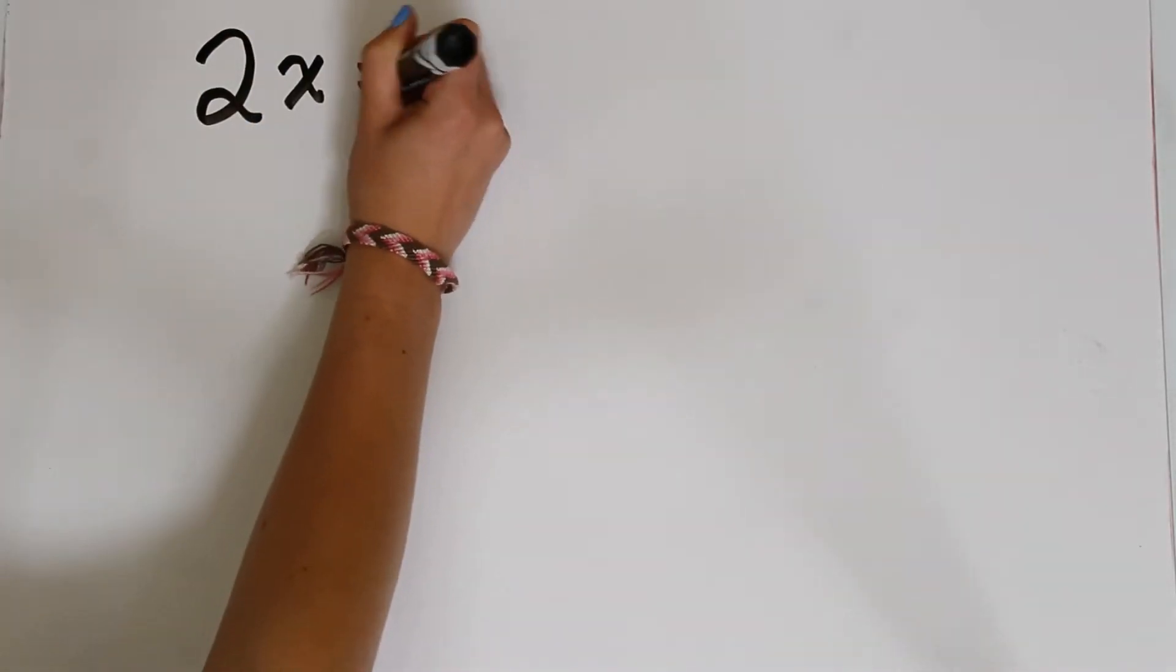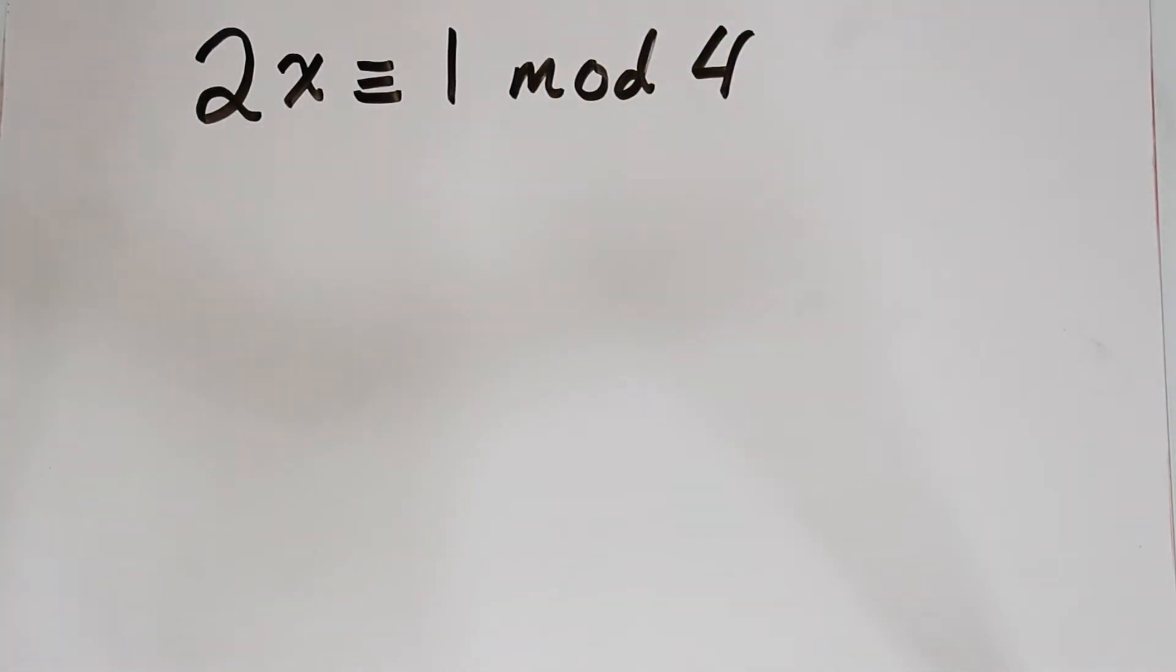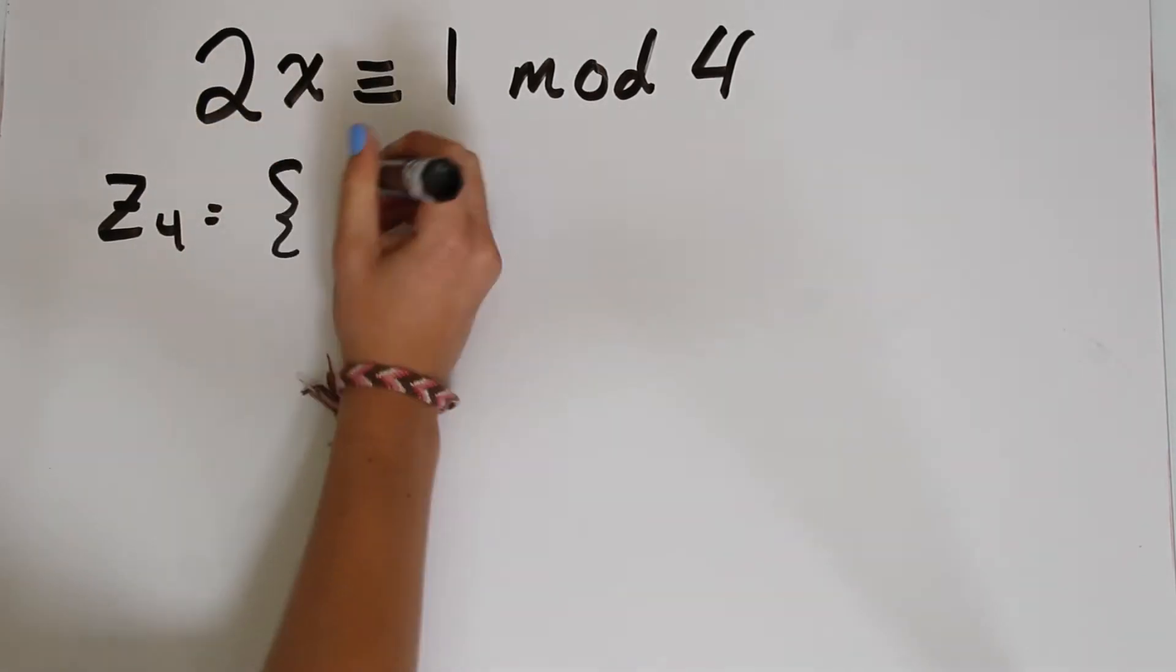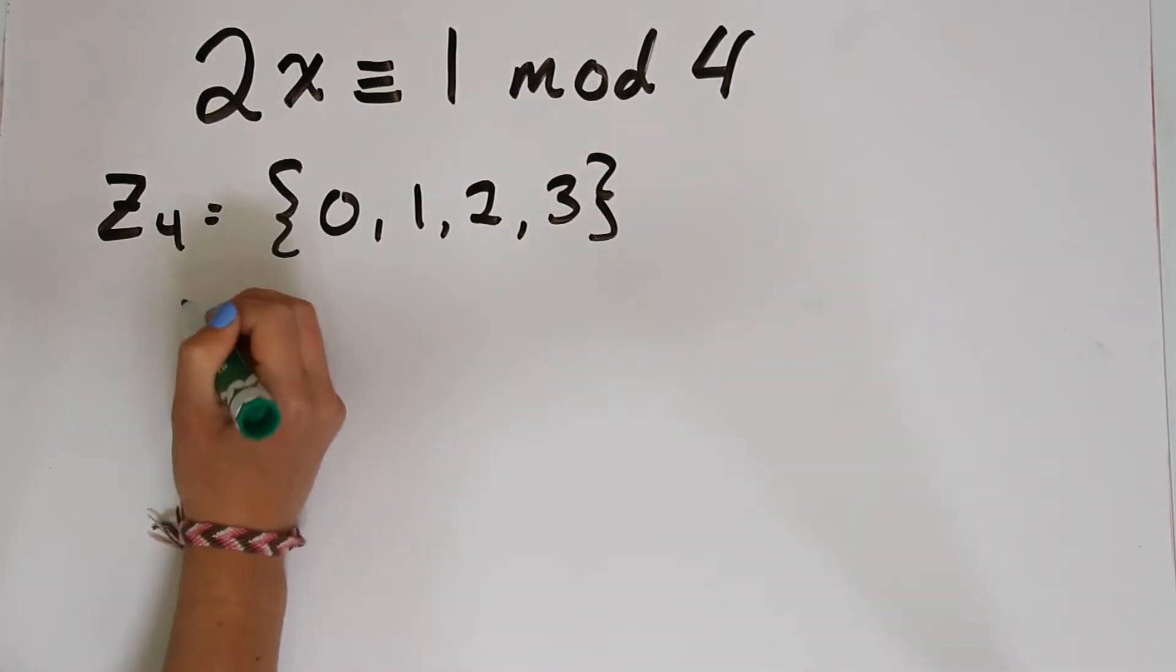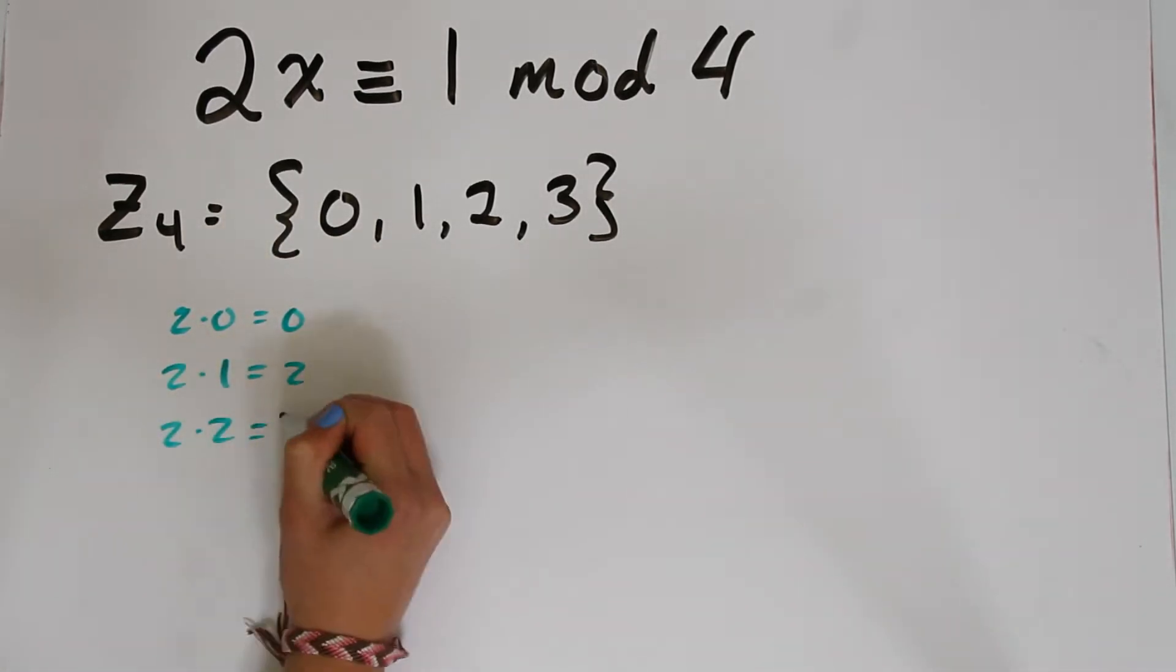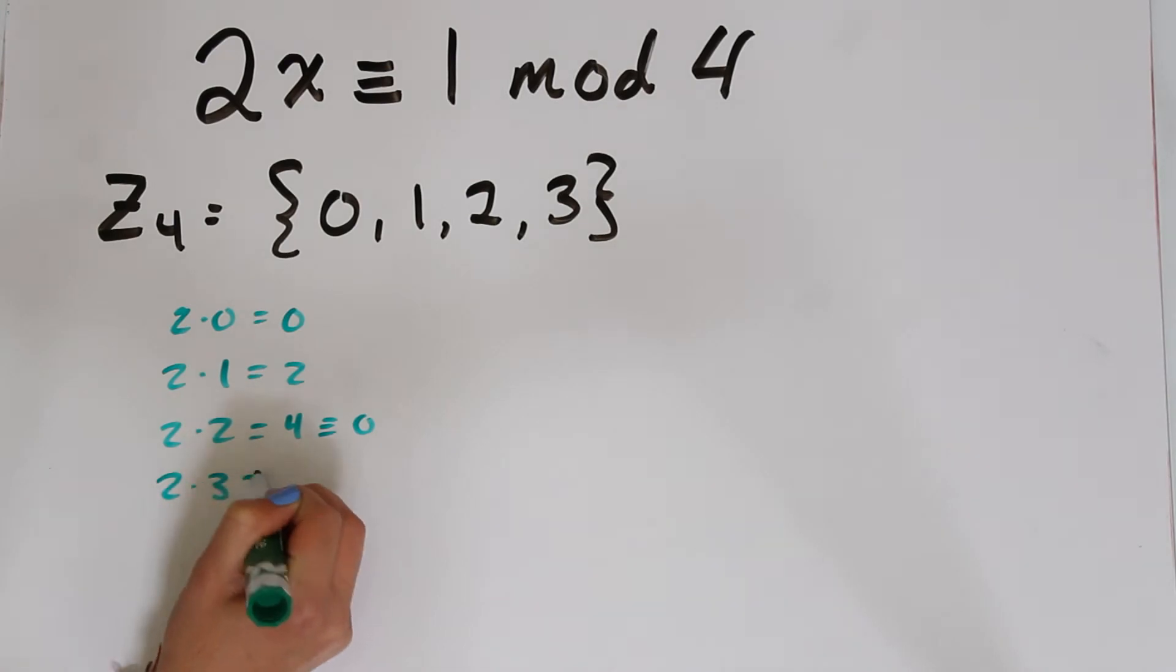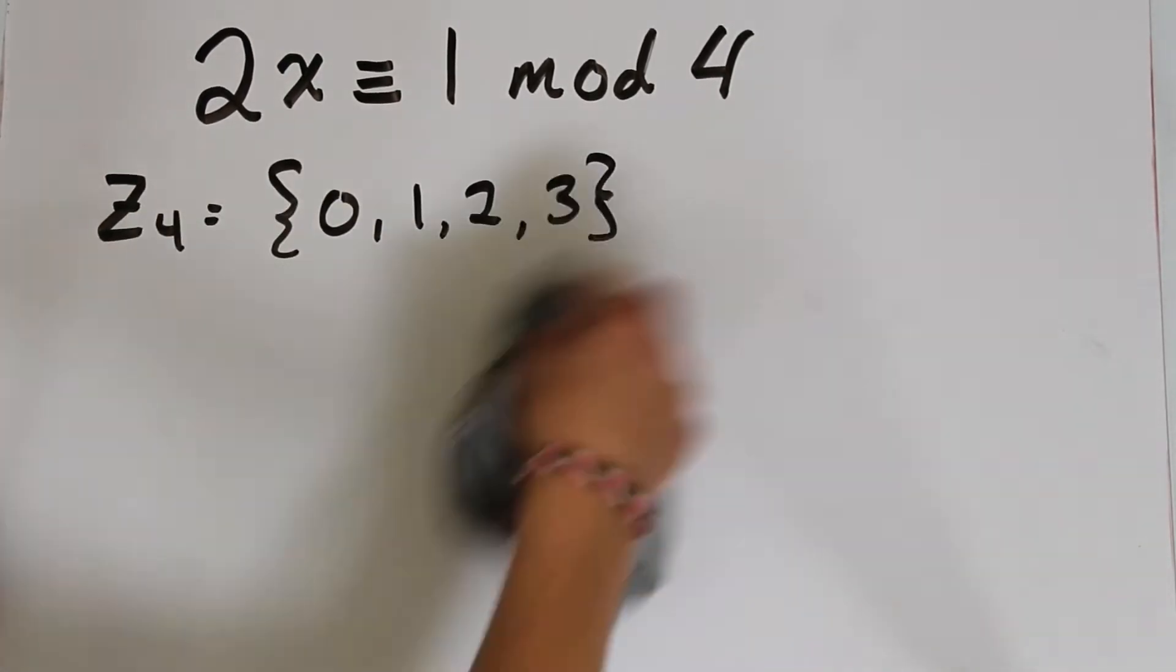Okay, so now we can finally look at our little congruence. 2x is congruent to 1 mod 4. We know that x must be the inverse of 2 in mod 4. We only have 4 options so let's go ahead and find which one it is. So 2 times 0 is 0. 2 times 1 is 2. 2 times 2 is 4 congruent to 0. 2 times 3 is 6 congruent to... wait what happened? Shouldn't there be an inverse in modulus 4? We've tested all the options.